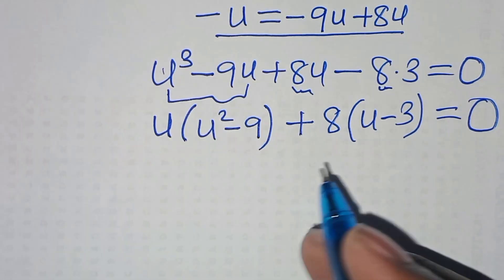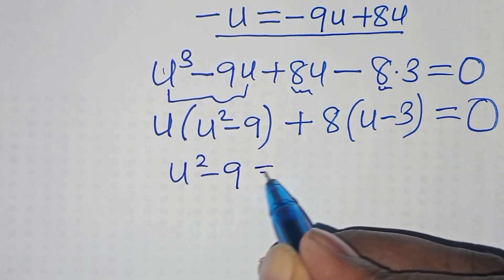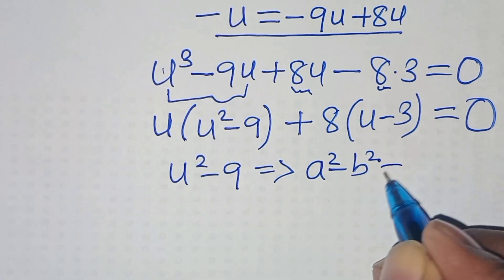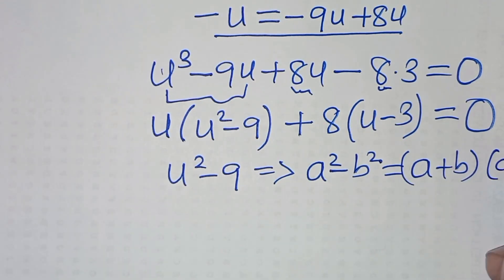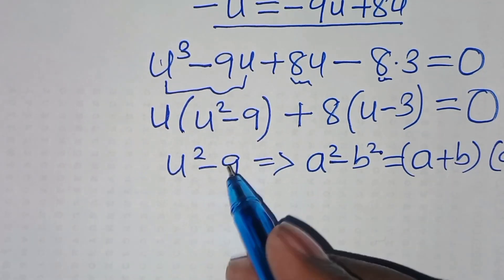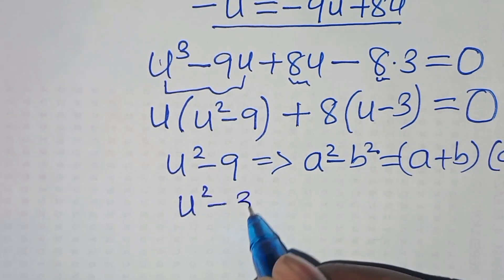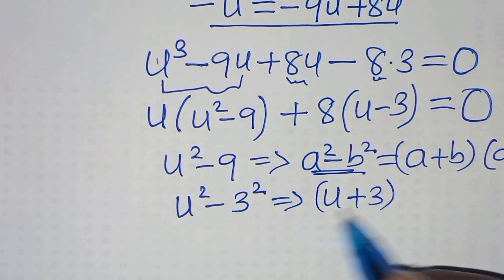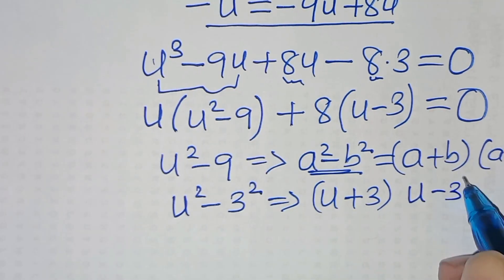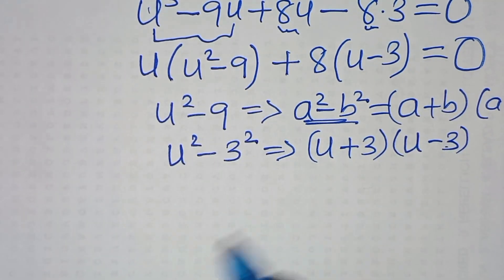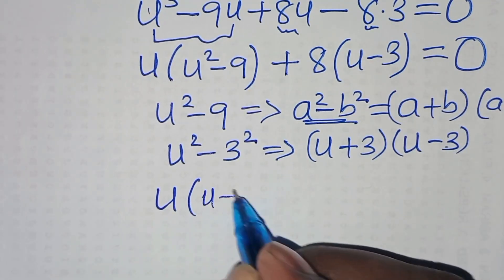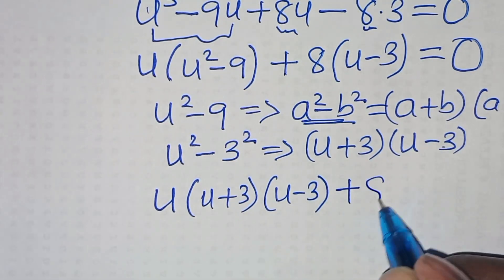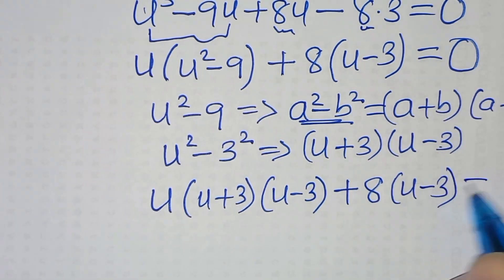Now, u squared minus 9 is actually in the form of a squared minus b squared, which we can express as a plus b times a minus b. In this case, we can express u squared minus 9, which is 3 squared, applying this identity, to get u plus 3 times u minus 3. Substituting this, we have u multiplied by u plus 3, multiplied by u minus 3, then plus 8 times u minus 3, this is equal to 0.